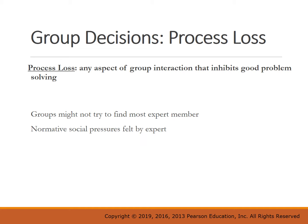Another reason might be normative social pressures felt by the expert in the group — maybe the expert feels they're speaking up too much and lets everyone else speak up instead, so they don't provide the expertise needed. Also, there could be other communication problems: people talking over each other, some people not talking at all, or other people dominating the meeting.